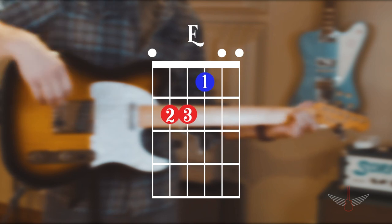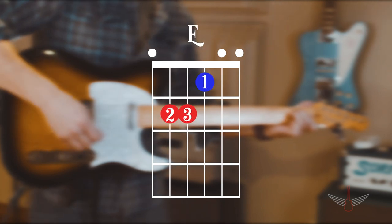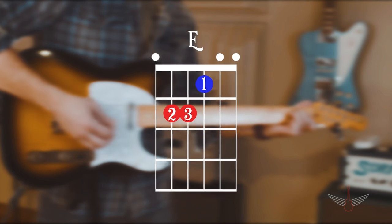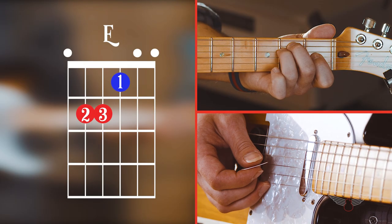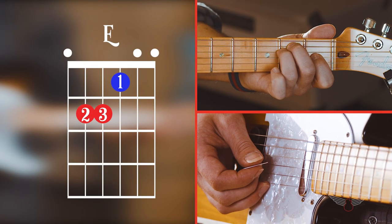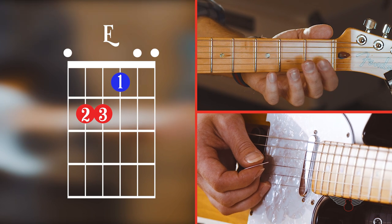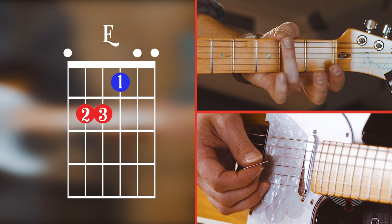These numbers in the round circles represent which fingers you're going to use to make the chord. According to the chart, we're going to use your first finger or pointer, second finger or middle finger, and third finger or ring finger.